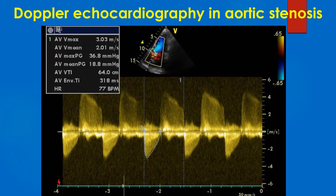In the image, the peak velocity is 3.03 m/s and mean gradient is 18.8 mmHg. By mean gradient it is mild aortic stenosis, and by peak velocity it is moderate aortic stenosis. We might report it as mild to moderate aortic stenosis.